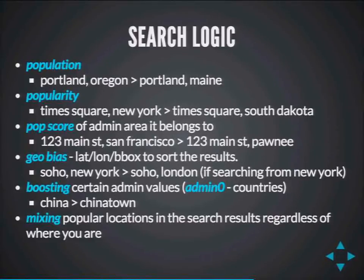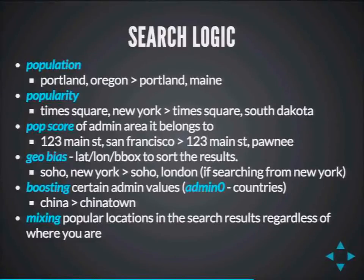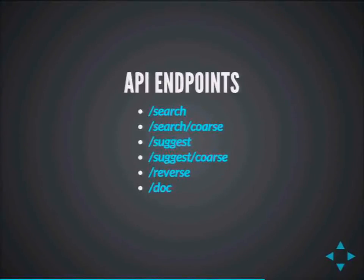There's also dynamic ranking via geo bias. If you're in New York and search for 'Soho,' it shows Soho New York higher than Soho London. But if you don't provide your lat/long, Soho London shows up first because it's more popular globally. We also boost certain value types — if you search for 'China,' China as a country should appear first, rather than Chinatown from New York City, assuming no geo bias. The API has four endpoints: search (full-text search), suggest (autocomplete), reverse (reverse geocoding), and doc (document lookup by ID).